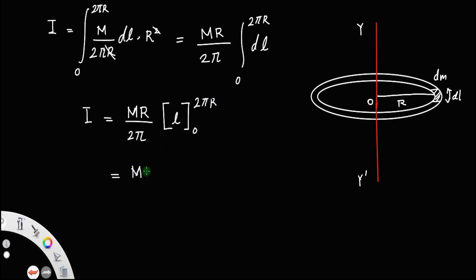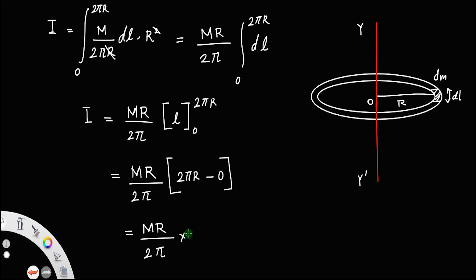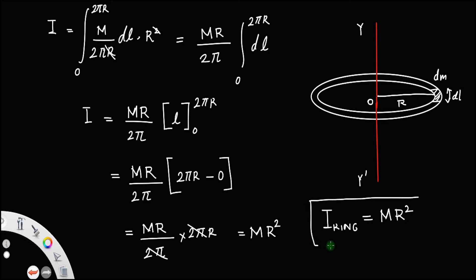Putting in the limits: mr/2π into (2πr minus 0). Cancel 2π and 2π — this is equal to mr². So the moment of inertia of a ring is mr², provided the axis is perpendicular to the plane of the ring and passes through its center.